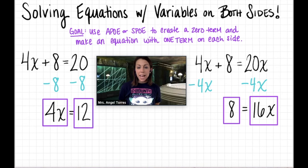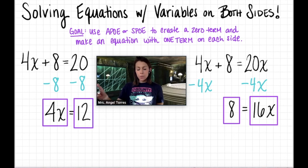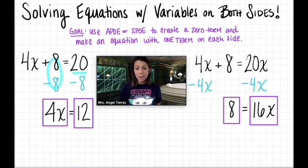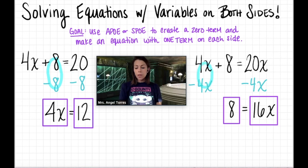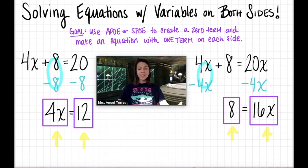Let's quickly recap. If our goal is to get equations down to a single term on both sides, it's all about which term you create zero out of. In the first equation, we created zero out of the constant because the other side had a constant term. In the second equation, we made zero out of the variable because the other side had a variable term. In both cases we successfully got one term on each side, which meant we were basically DEPO and done. That's it for today's lesson — see you next time.